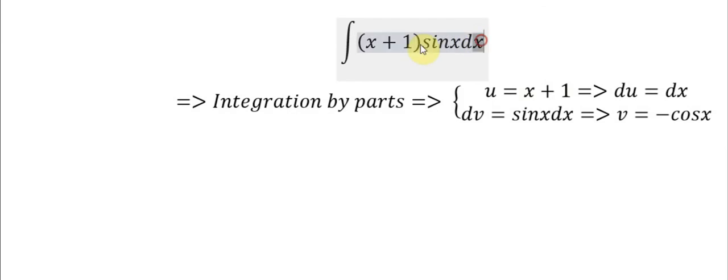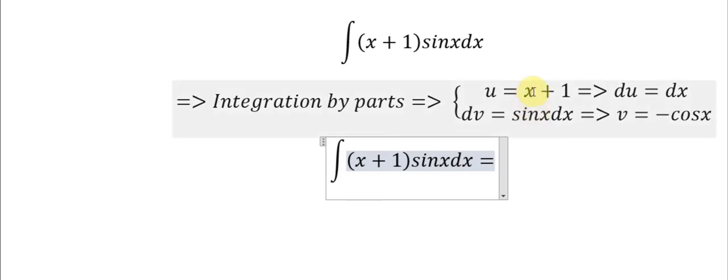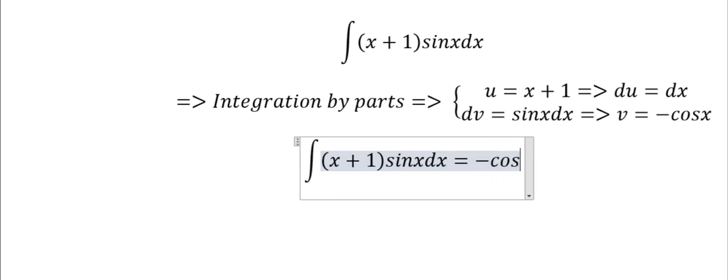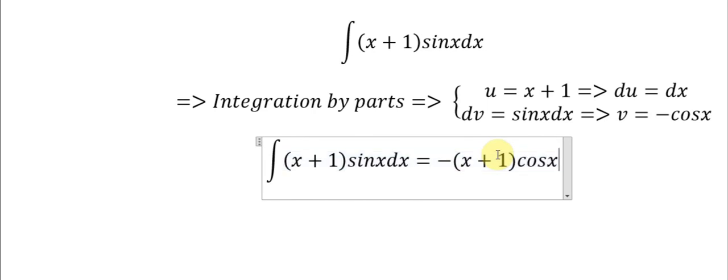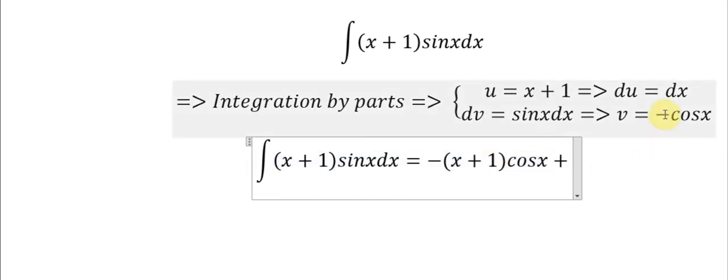So we can answer the question. We have (x + 1) multiplied with the negative cosine x. Because we have the minus, this will change to the plus when we integrate.